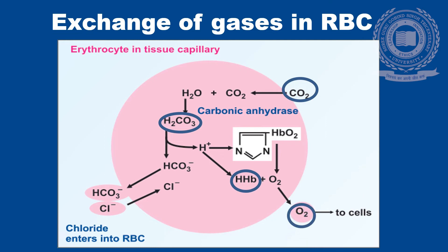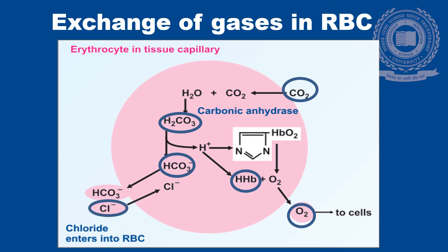An important point to remember is that the bicarbonate ion generated by the dissociation of carbonic acid exits out of the cell, which is followed by the entry of chloride ion inside the cell to maintain the electroneutrality of the cell.